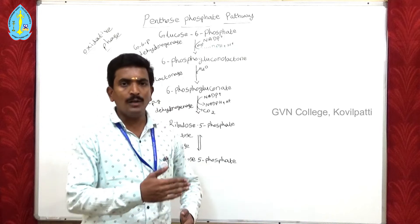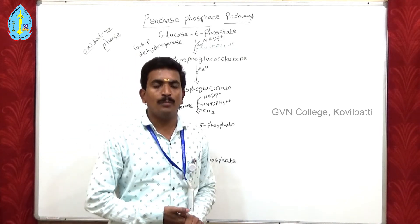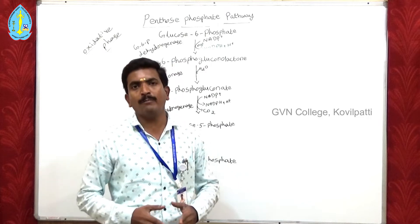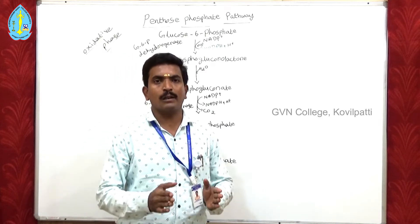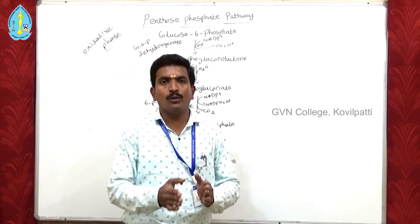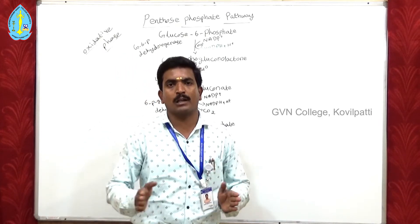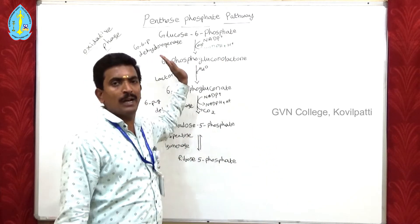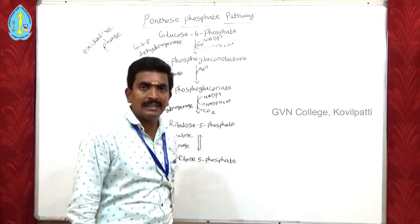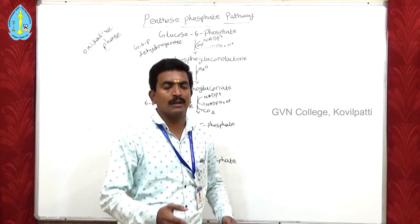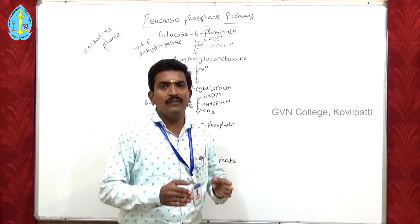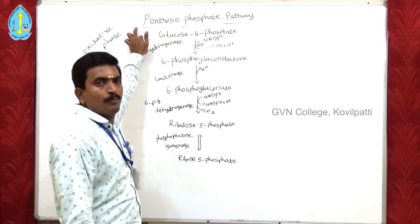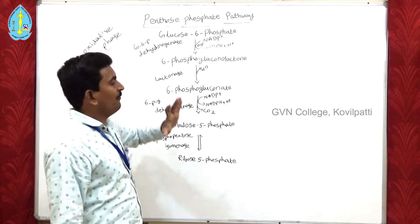Let me see what processes are involved in this Pentose Phosphate Pathway. This pathway has two phases — it breaks down glucose 6-phosphate in two phases. The first phase is the oxidative phase and the second phase is the non-oxidative phase. In this class, we will see only the oxidative phase of the Pentose Phosphate Pathway.